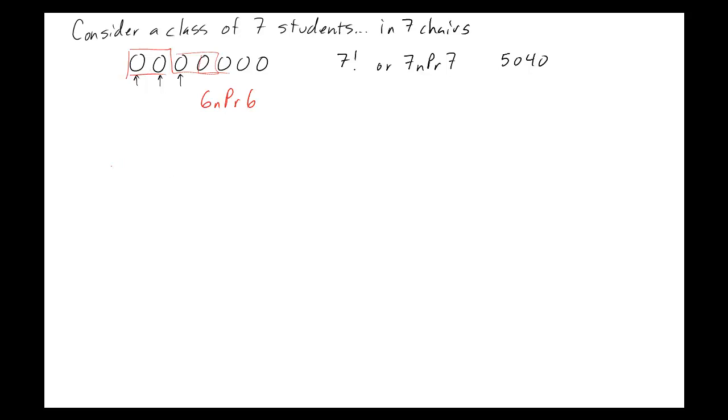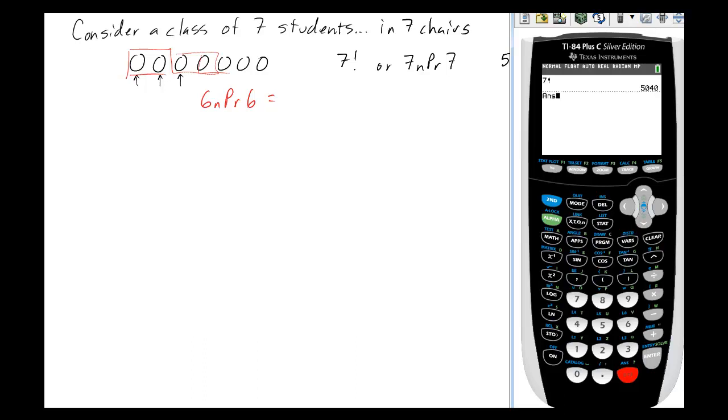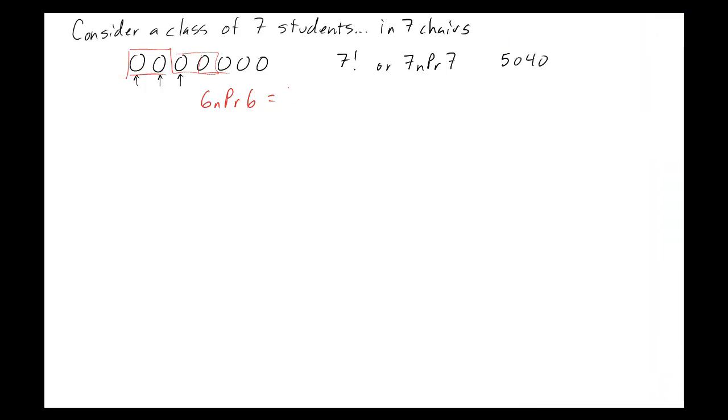So in this case we're going to do essentially the same thing, we're just going to go 6 NPR 6 to find out how many different ways they can sit if those 2 must sit together. So we'll go instead of 7 we want 6 which is 720, but now what we need to do is we need to remember that there's 2 different ways that they could sit inside those seats. You could have girl 1 here and girl 2 or they could be switched. So there's 2 possible ways that each one of these 720 could turn out. So I multiply by 2 and I get a total of 1,440 ways.